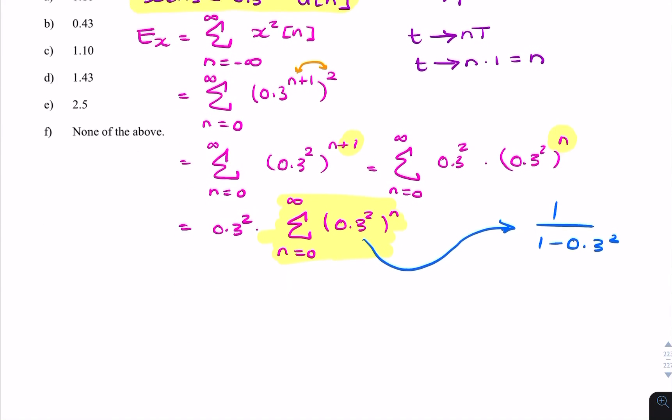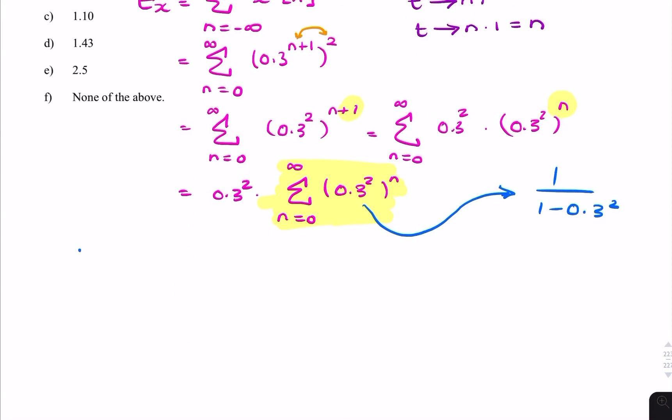And just to remind you, that's because the summation of x to the power n, n is 0 to infinity equals 1 over 1 minus x. So that's the Taylor series you're expected to know.